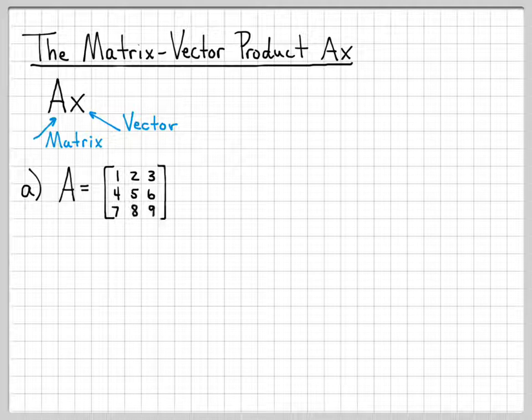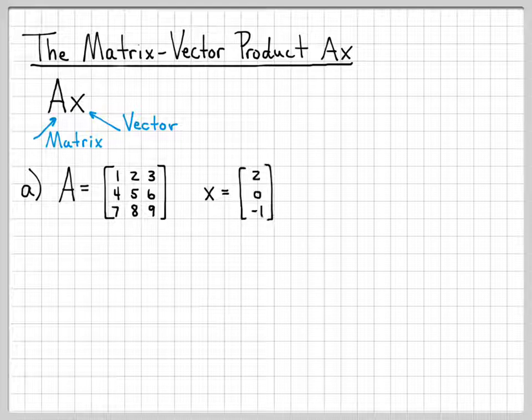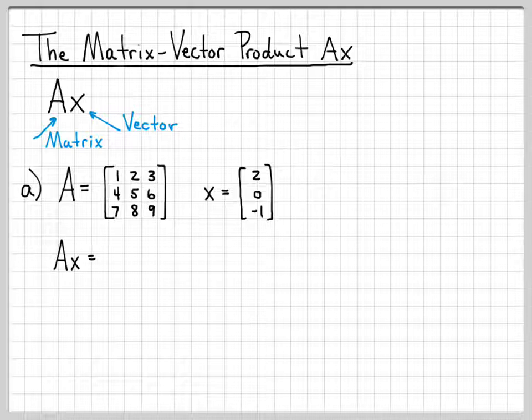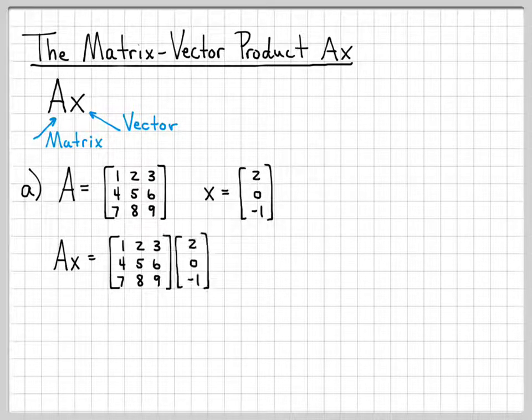In the first example here, part A, let's let A be this matrix: 1, 2, 3, 4, 5, 6, 7, 8, 9. And we'll choose X to be the vector 2, 0, negative 1. We're going to compute the quantity A times X. So if I write out what that means, that means take A and multiply it by X.